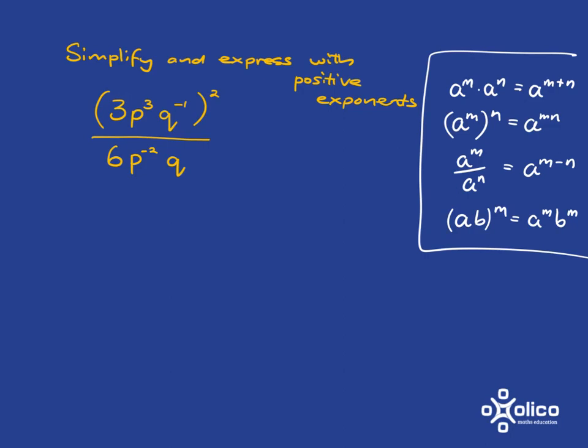So we're going to start off by dealing with this squared. So it's this whole thing in the brackets that's squared, so we must go and square each little bit in the brackets. So 3 squared gives me 9. p cubed squared is going to require this rule, and so it's going to be p to the 6. And q to the negative 1 squared, again we'll apply that rule, so it's negative 1 multiplied by 2, so it's negative 2.